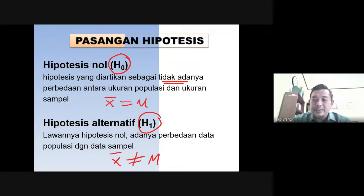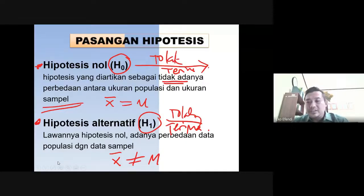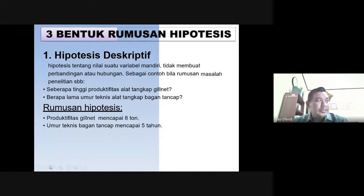Dalam hipotesis itu hanya dua: apakah sama antara sampel dan populasi, atau apakah berbeda antara sampel dan populasi. Uji hipotesis tadi tujuannya adalah untuk menerima apakah H0 atau H1 yang akan diterima. Kalau dia tolak H0 artinya terima H1. Pada umumnya yang dibuktikan terlebih dahulu adalah hipotesis nolnya. Kalau hipotesis nolnya diterima, otomatis H1-nya gugur. Kalau H0-nya ditolak maka H1-nya yang diterima.